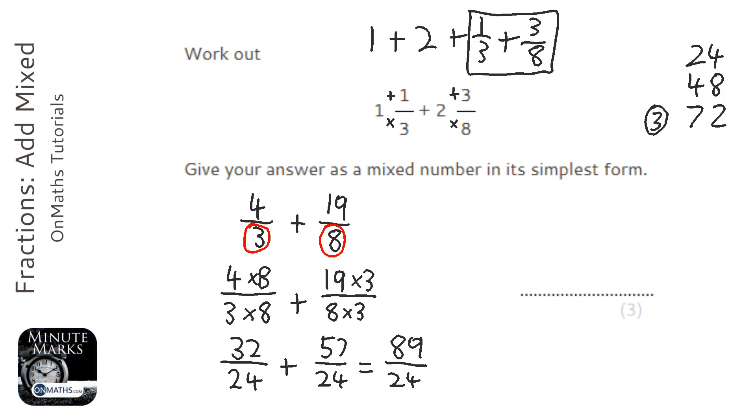Now the reason I'm doing that is because I need to make this a mixed number. So what I'm going to do is I'm going to find out how many 24s I can take away from 89, which is 3.